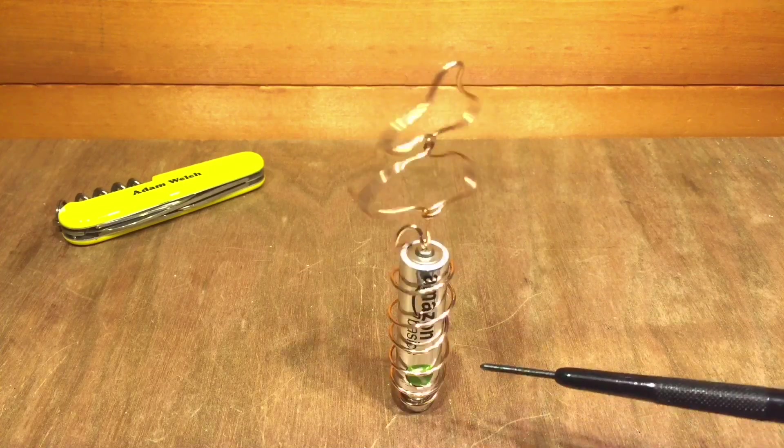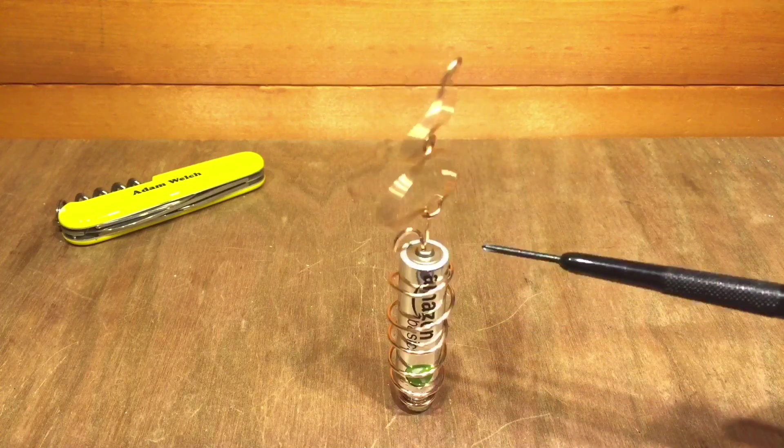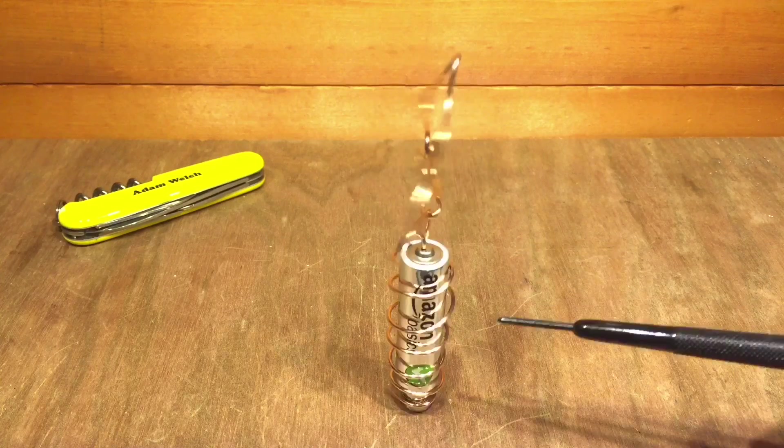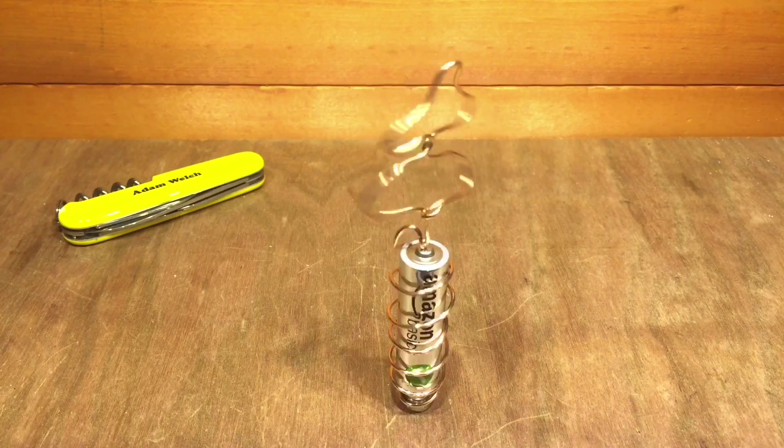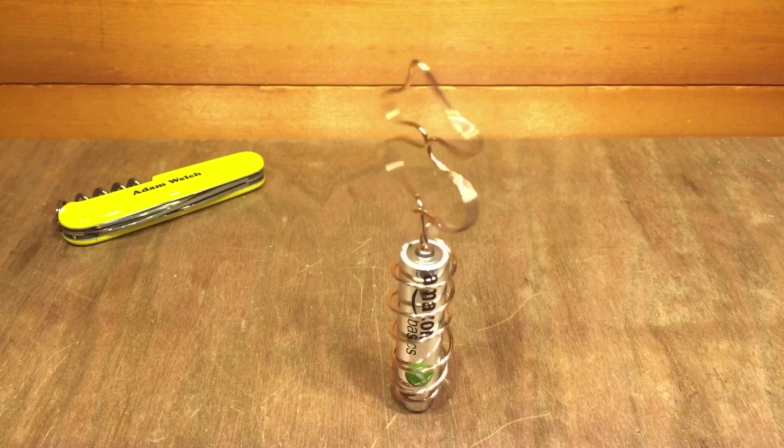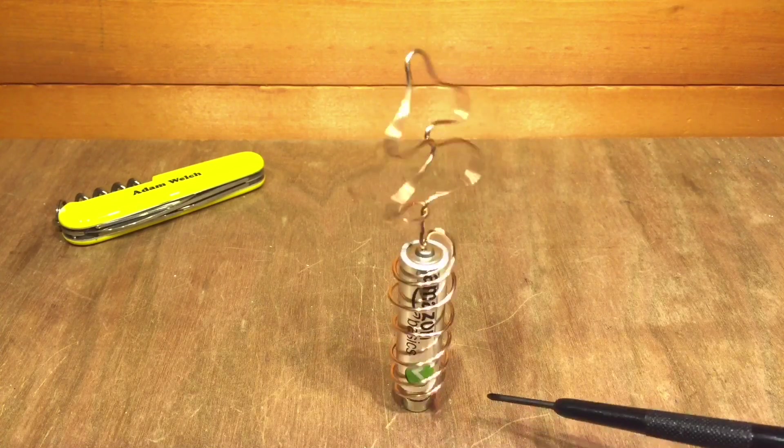here as a double A battery. There's a single piece of copper wire going from the positive terminal around the battery down to the negative, which is sat on top of two neodymium magnets. That copper wire just